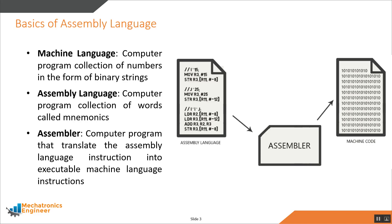A computer program is a collection of numbers stored in memory in the form of ones and zeros. The microprocessor reads these numbers one at a time, decodes them and performs the required action. We term these binary strings as machine code. Although machine language instructions make perfect sense to a computer, humans cannot comprehend them.